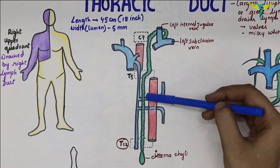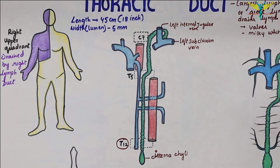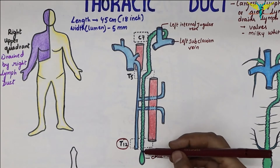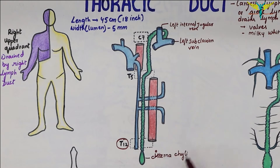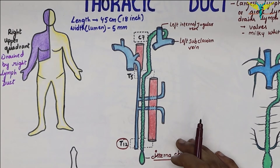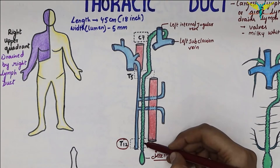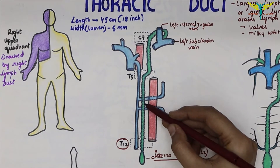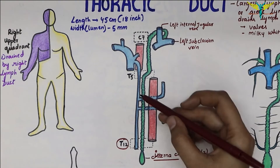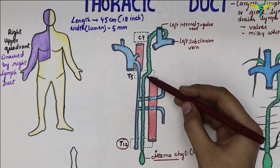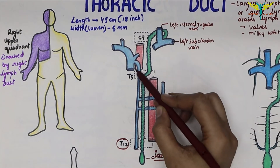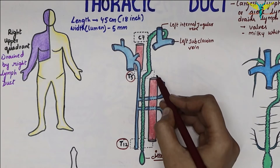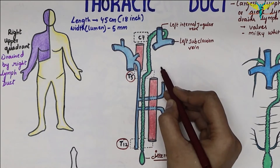The thoracic duct begins in the abdomen at the lower border of T12 vertebra as the continuation of the cisterna chyli. The cisterna chyli lies in front of the bodies of L1 and L2 vertebrae. It enters the thorax through the aortic opening of the diaphragm and ascends in the posterior mediastinum to the right side of the midline, on the front of the vertebral bodies. On reaching T5 vertebra, it crosses from the right side to the left side.